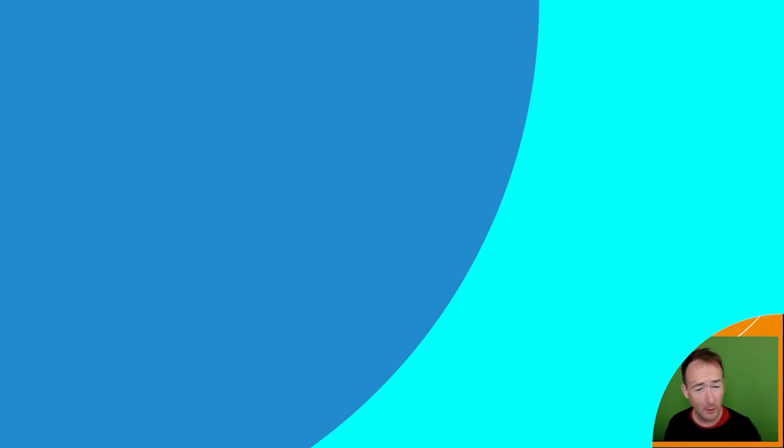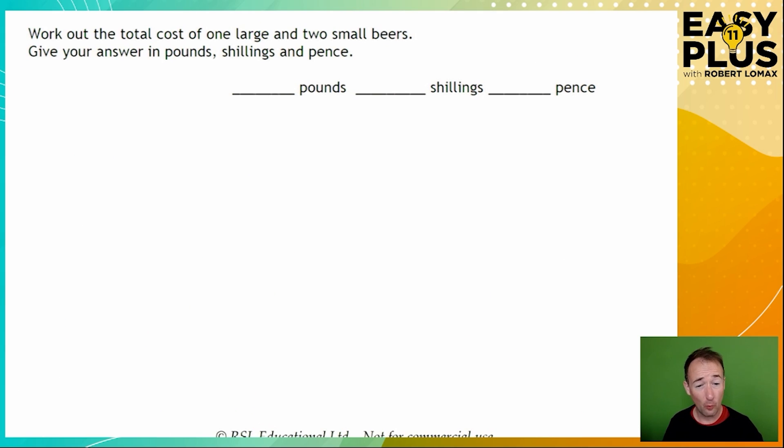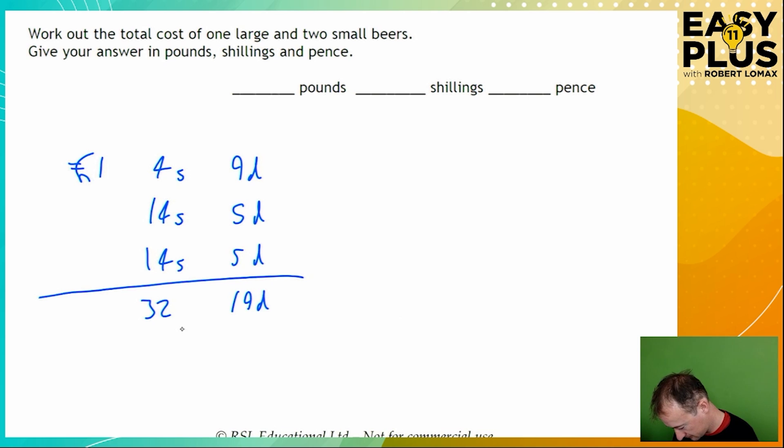Now we need to add up the cost of 1 large and 2 small beers. So let's write it out nice and clearly. A large beer is 1 pound 4 shillings and 9 pence. While a small beer is 14 shillings and 5 pence. Of course we've got 2 small beers here. And adding it up we have 19 pence, 32 shillings and 1 pound. If we move backwards. But be careful. This is not our final answer.